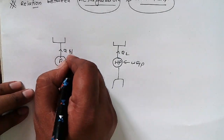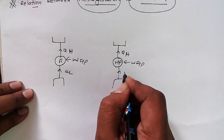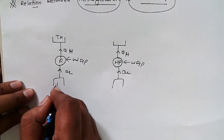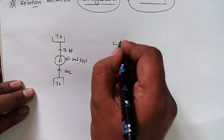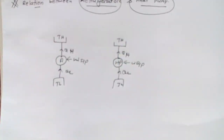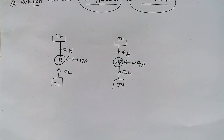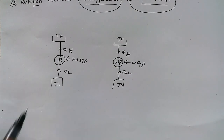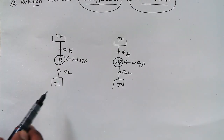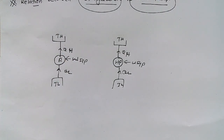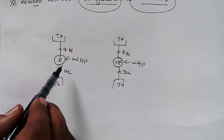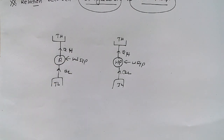In the diagram, this is the higher temperature TH and this is the lower temperature TL. So TH is greater than TL because this is the lower temperature reservoir and this is the higher temperature reservoir. Similarly, QL is less than QH.